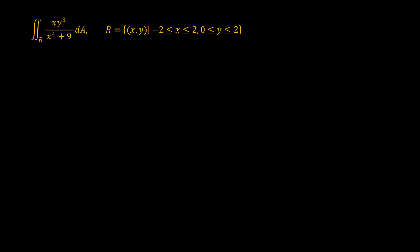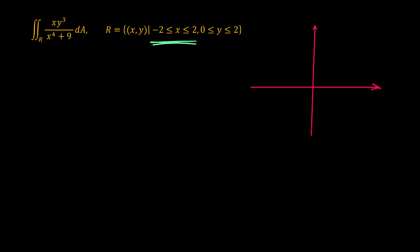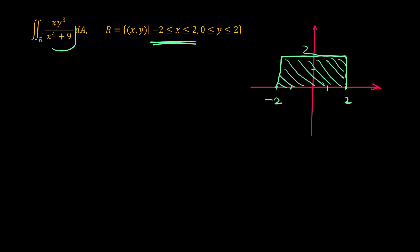We don't want to find the value of this integral with standard integration methods — we want to use symmetry. First, let's draw the region: x is between negative 2 and 2, and y is between 0 and 2. The region of this integral is this rectangle, and we want to find the integral of this function over this region.